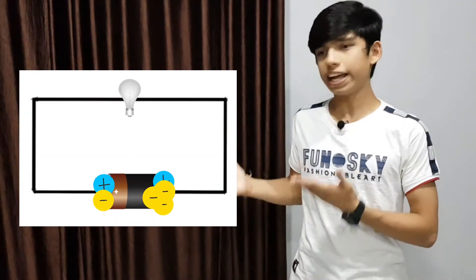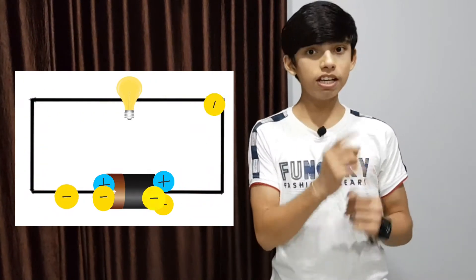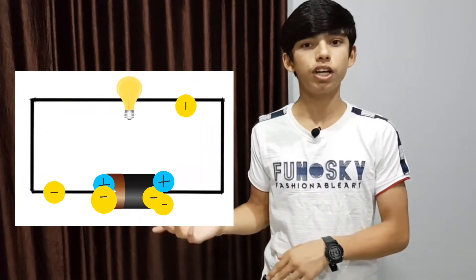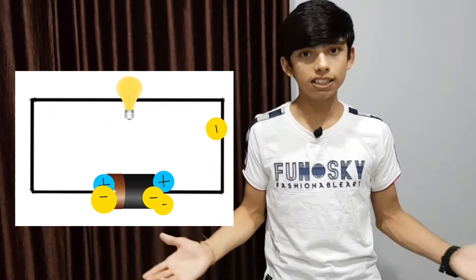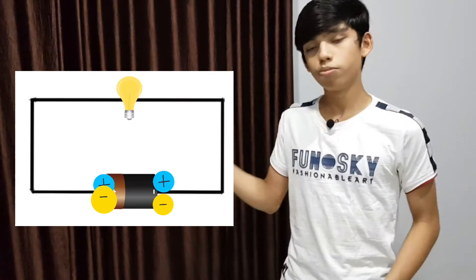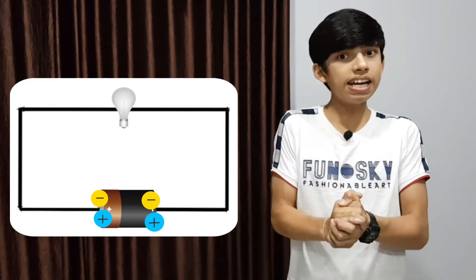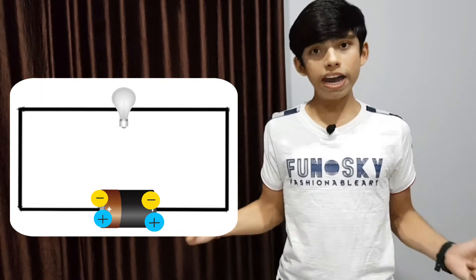Now let's connect this battery with a circuit. Why will the electrons flow? On the positive terminal there are protons, and those protons are attracting the electrons because a proton has a positive charge and an electron has a negative charge — unlike charges attract. So the electrons flow toward the positive terminal. Once equal numbers of electrons are restored on both terminals, the battery is discharged again.